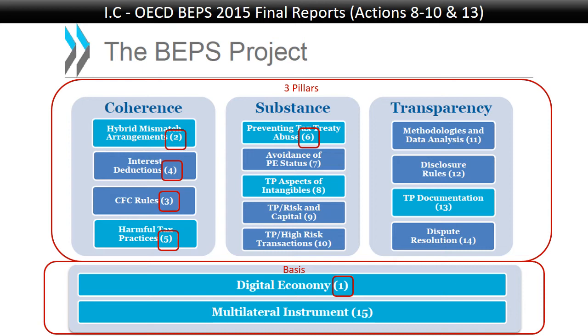Action 13 is TP-related and deals with the master file, the local file, and country-by-country reporting — topics we covered when going through the chapters of the transfer pricing guidelines.